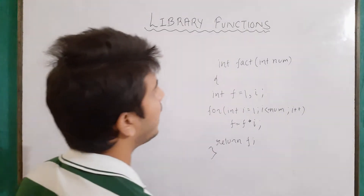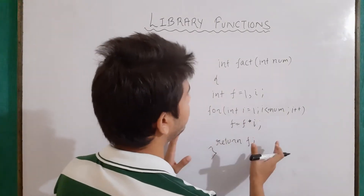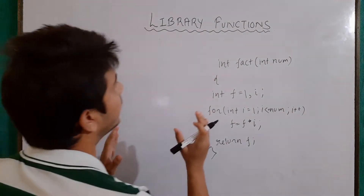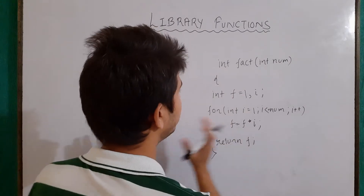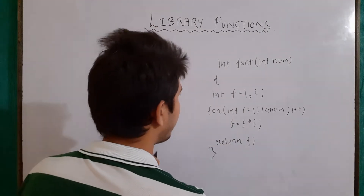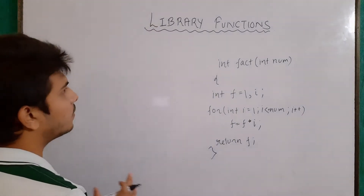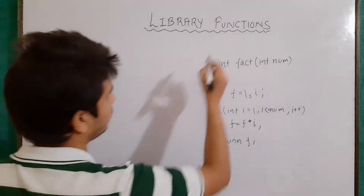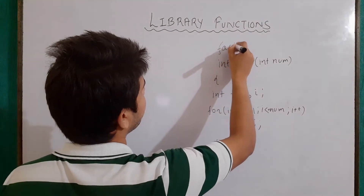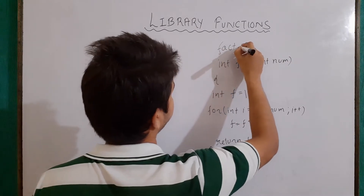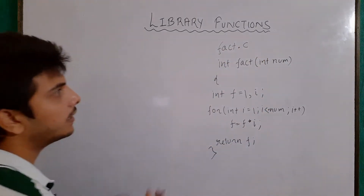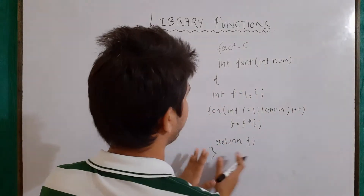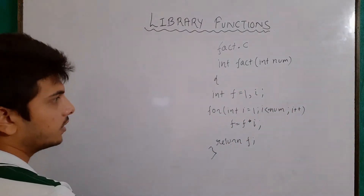Now let's say I want to add a function definition to our existing library. The definition of this function should be included in our existing library. First of all, we will create a file and give it a name — let's say the name is fact.c. Then I will write the definition of our function. Here is the definition of our factorial function.